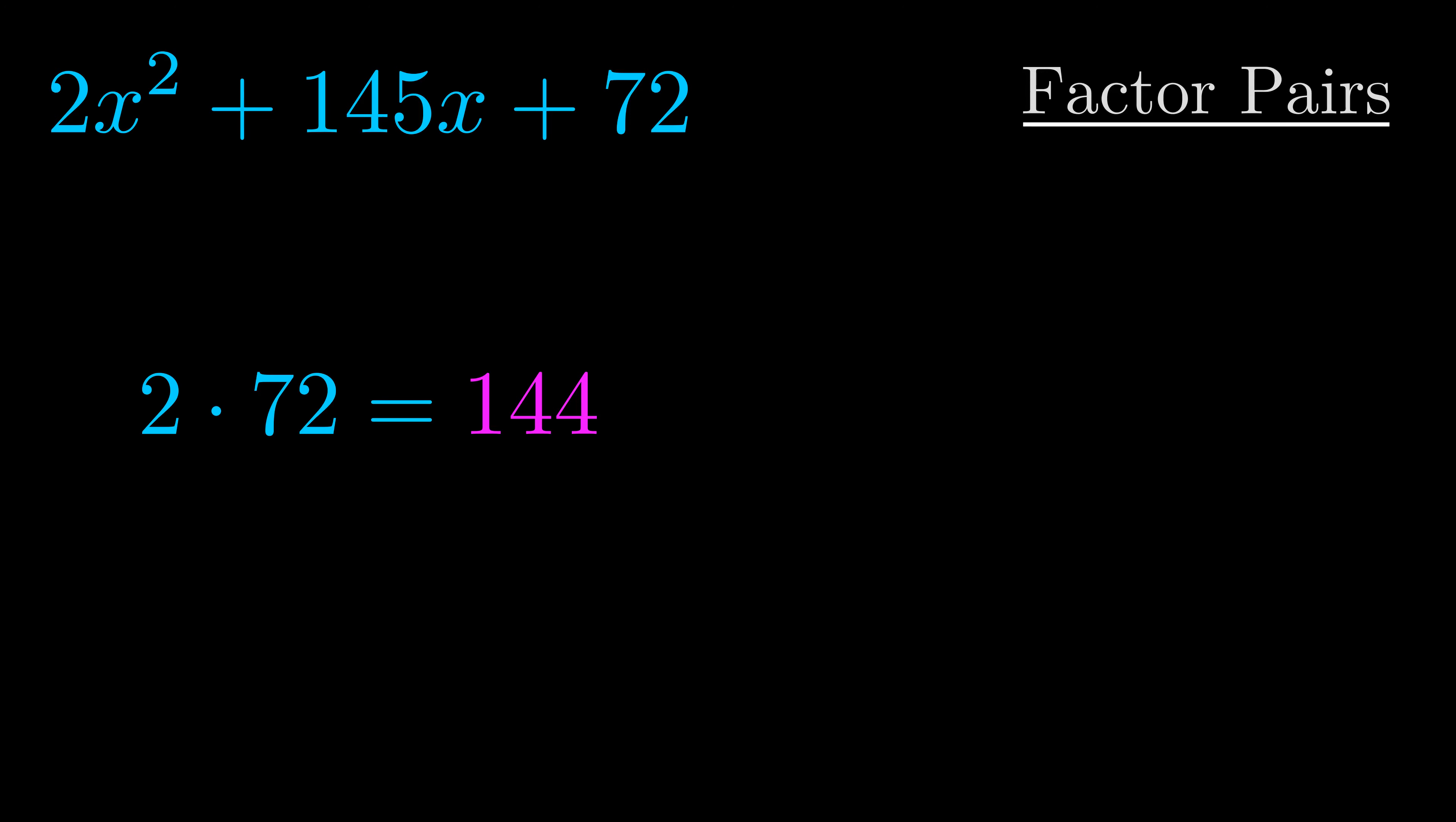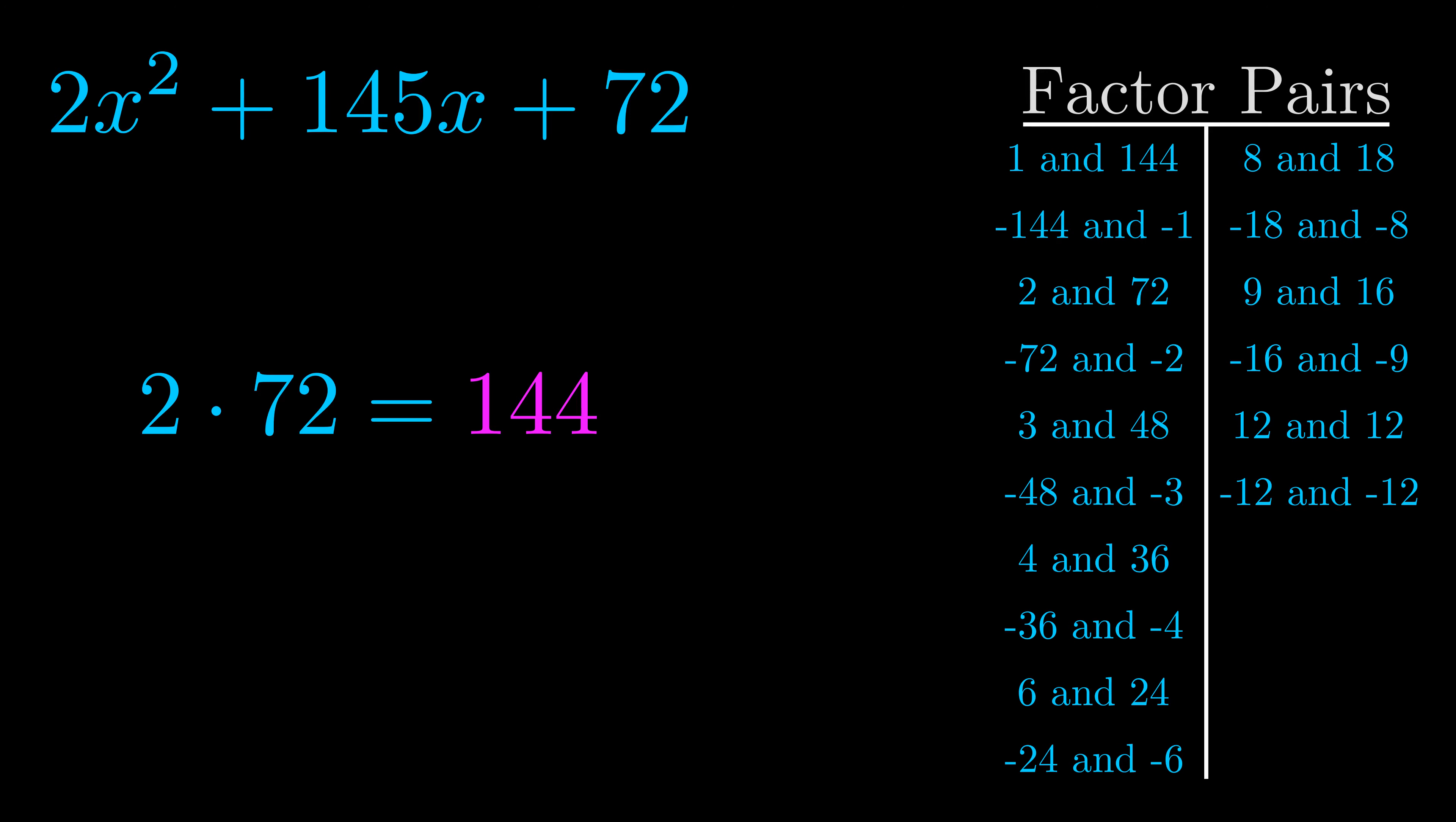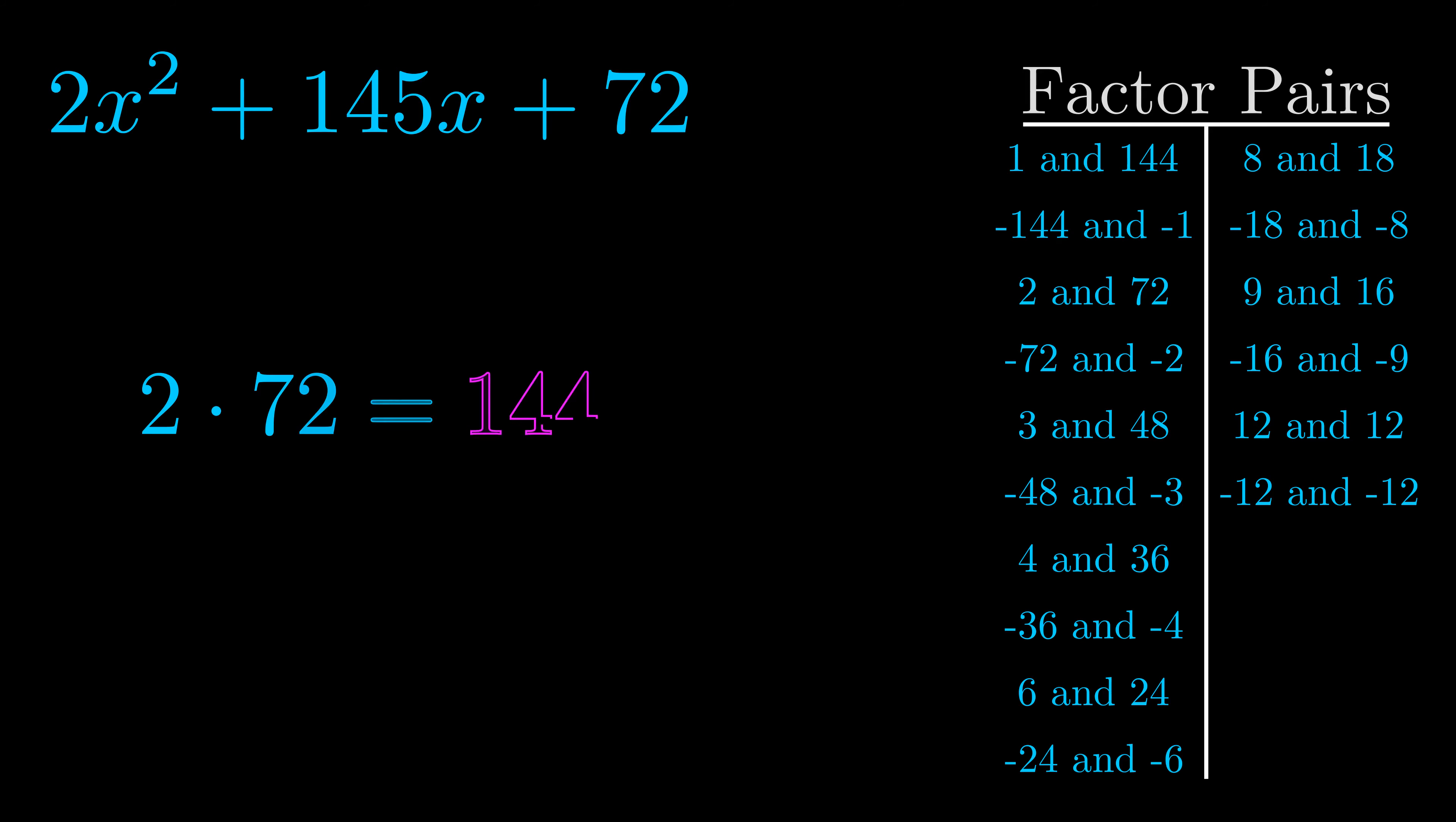Okay here's what I came up with. Now once you have these factor pairs the goal is to find which of these pairs adds to the b value. The b value is the coefficient on the x term. That's the middle term, the one that we haven't done anything with yet. And really this is the only factor pair that we need.